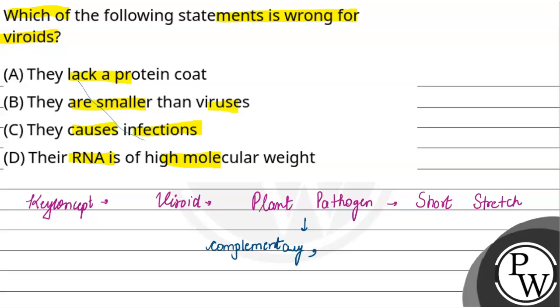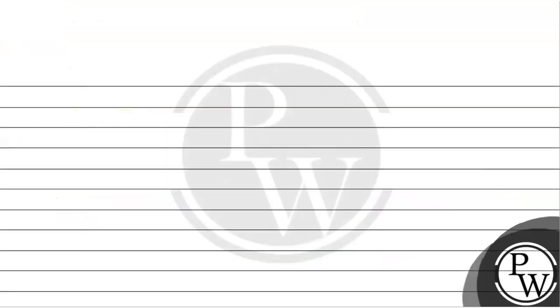They have circular stranded RNA. Now when we discuss viroids, we can say that viroids are smallest than viruses and are responsible as plant pathogens.